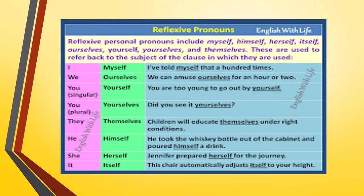Reflexive pronouns include: myself, himself, herself, itself, ourselves, yourselves, themselves. Reflex, as you know, is something that stretches, bends and comes back to its own shape. So reflexive pronouns simply means that pronoun which refers back to the subject of the clause in which they are used. For example, I is a personal pronoun and the reflexive pronoun of I becomes myself. We becomes ourselves. Remember to include the plural form — you in singular is yourself and you in plural is yourselves. They becomes themselves, he becomes himself, she becomes herself, and it becomes itself.